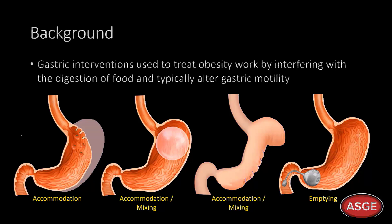Gastric interventions used to treat obesity are thought to work in part by interfering with the digestion of food and typically alter gastric motility. The original POSE gastric plication procedure targeted fundal accommodation to trigger earlier satiation. Intragastric balloons affect accommodation and mixing and lead to a delay in gastric emptying, similar to endoscopic sleeve gastroplasty. Other devices are thought to target emptying via the antral pump function.